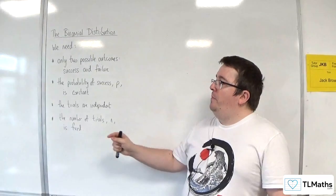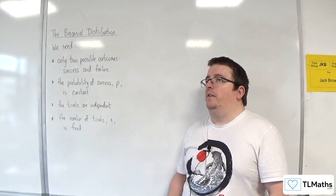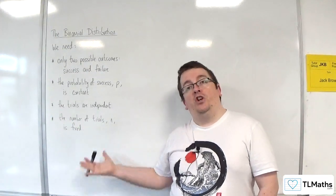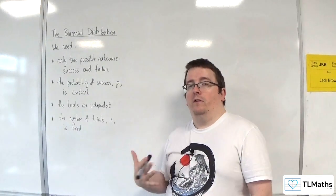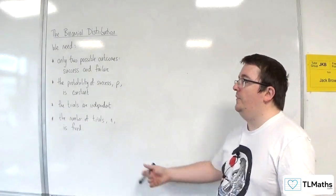And of course, with the binomial distribution, the number of trials is fixed. So it might say that there are 20 trials or 30 trials. Whereas with the geometric distribution, there was no fixed N. You could keep on going on and on forever, but the binomial distribution has N fixed.